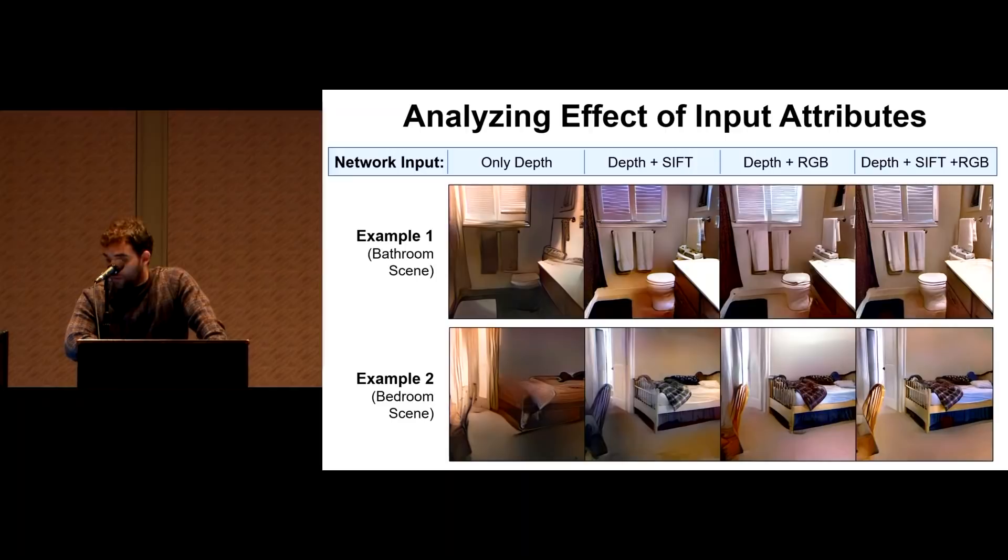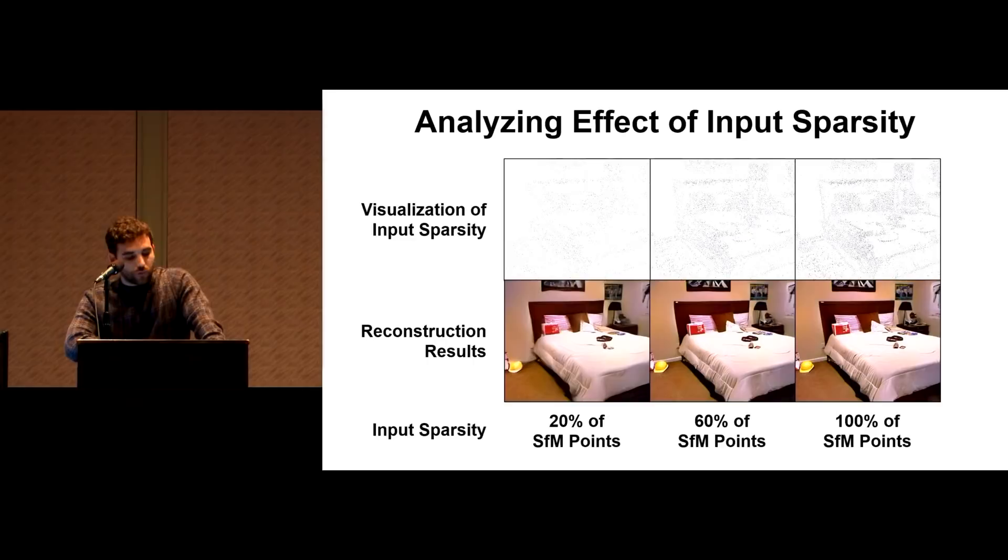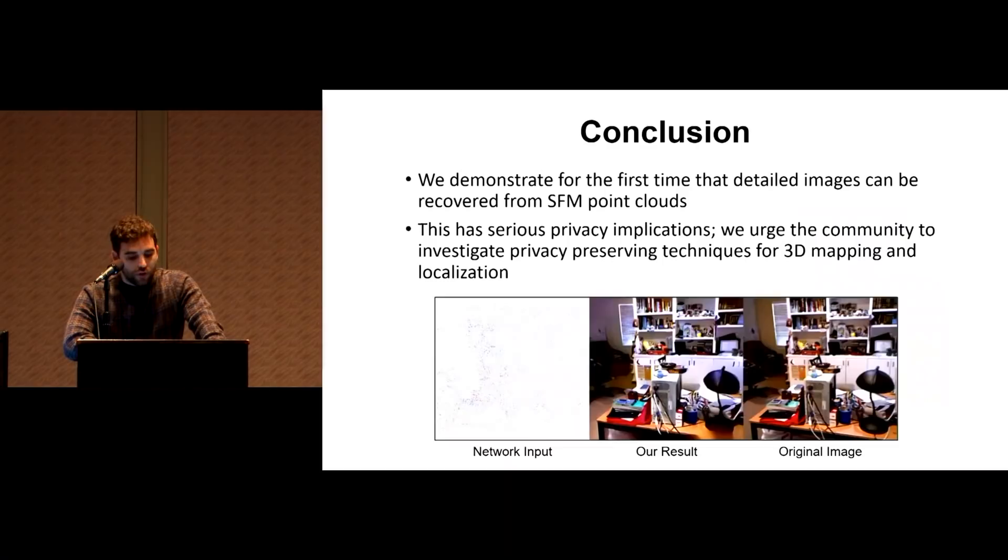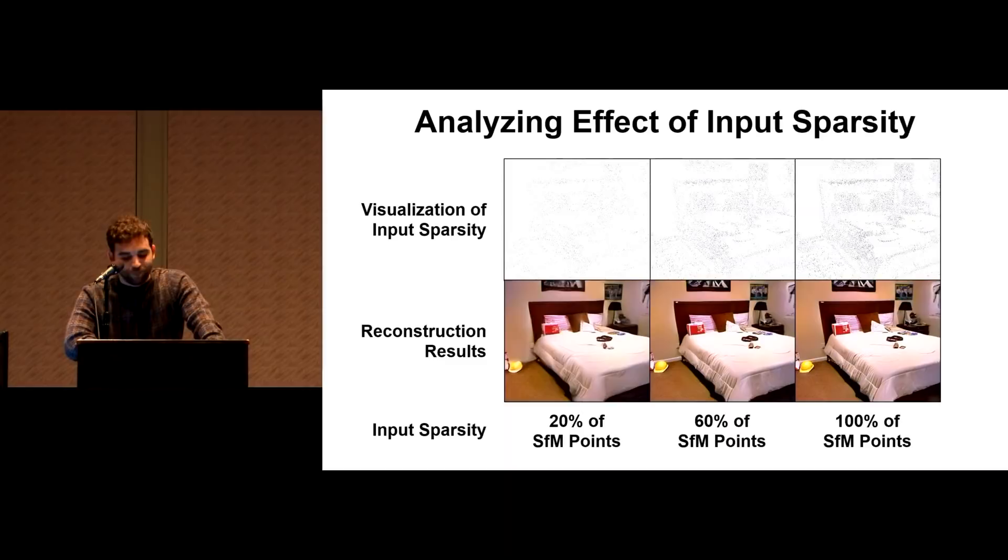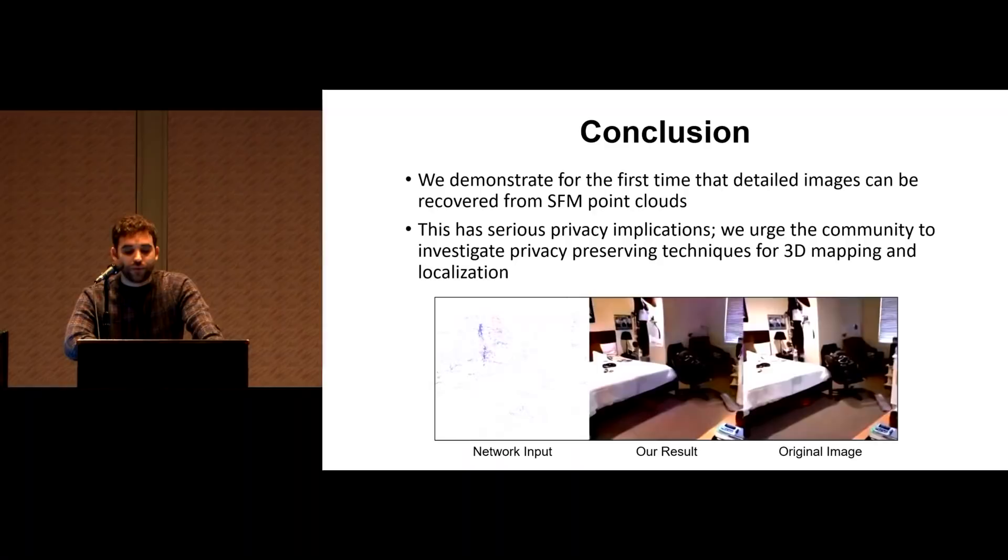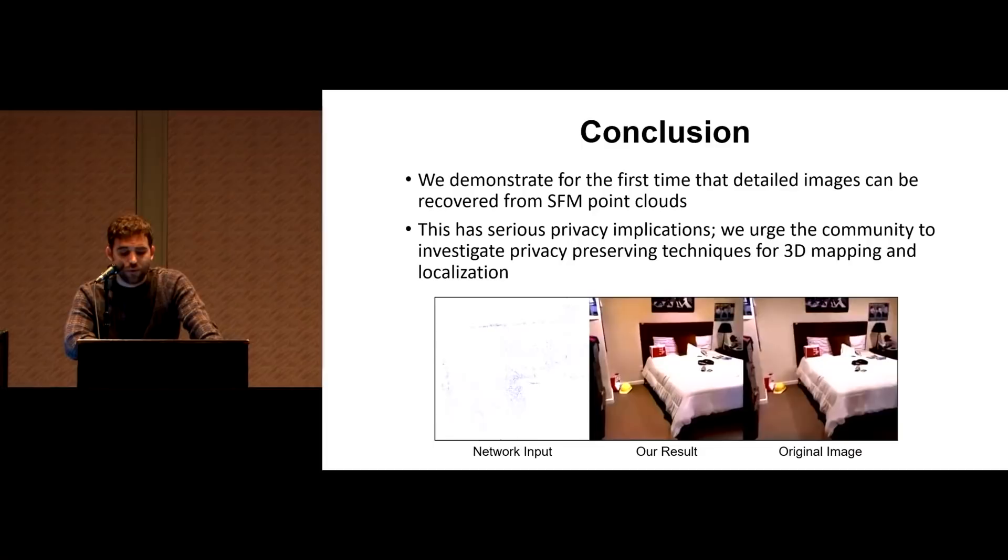So here we show the output of our model for inputs with varying sparsity levels. And you see our model is able to handle the sparsity variation quite well with graceful degradation as the sparsity decreases. And this was done by basically incorporating this into the training. So in conclusion, we demonstrate for the first time that detailed images of a scene can be recovered from sparse SFM point clouds. This has serious privacy implications which we hope will inspire the community to develop privacy-preserving techniques for 3D mapping and localization.